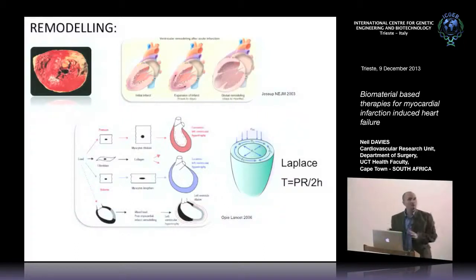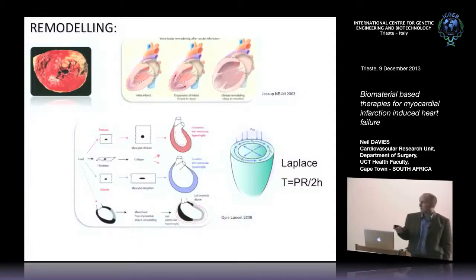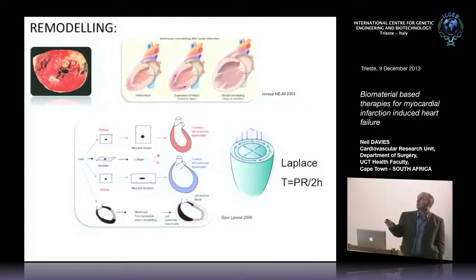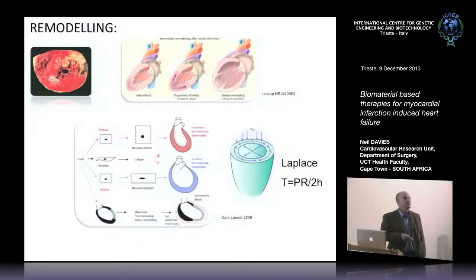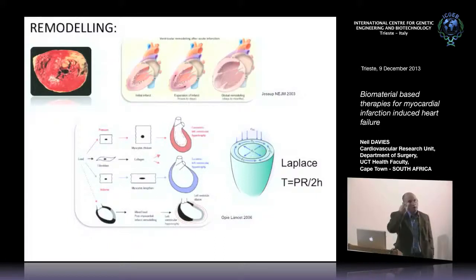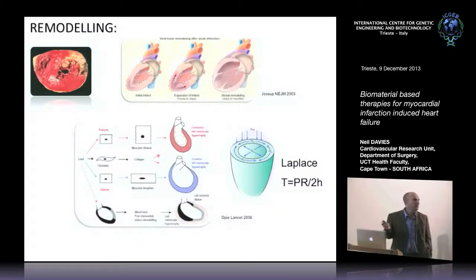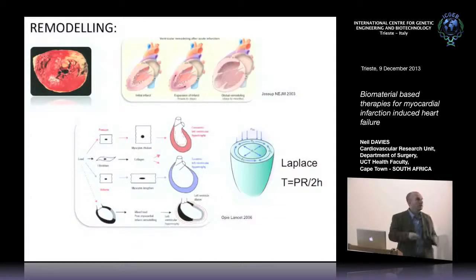Very briefly, in one slide, what we're targeting in myocardial infarction therapy for heart failure is trying to address a situation that happens in certain hearts: you get expansion of the infarct, which can then go on to pathological remodeling, so the heart becomes spherical and unable to pump effectively. We're looking at this first at the biomechanics of what's happening.